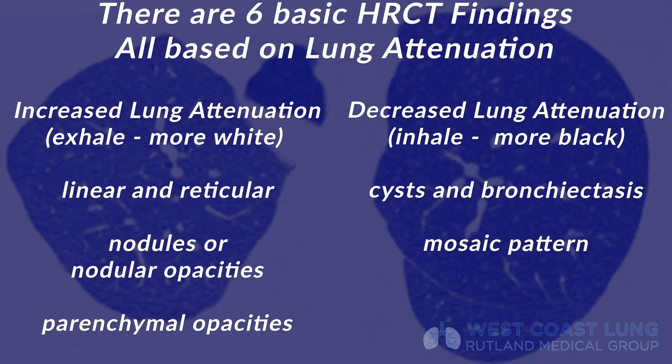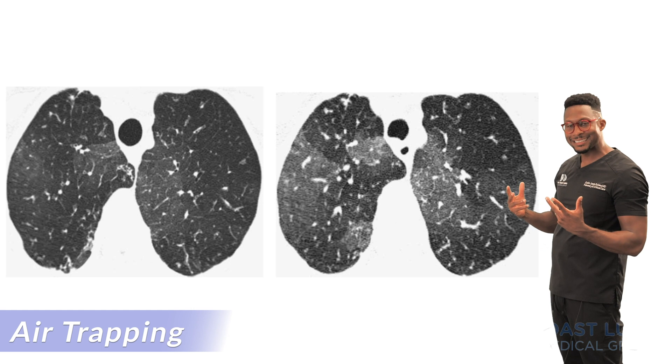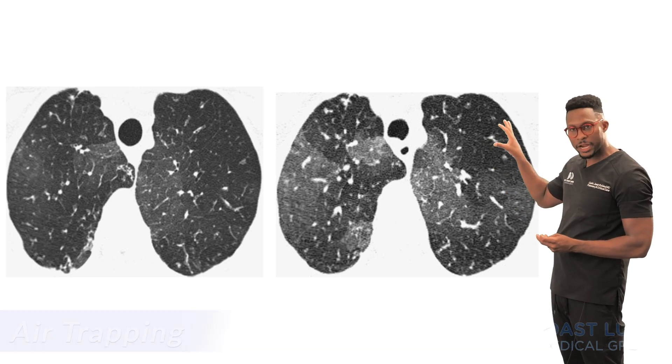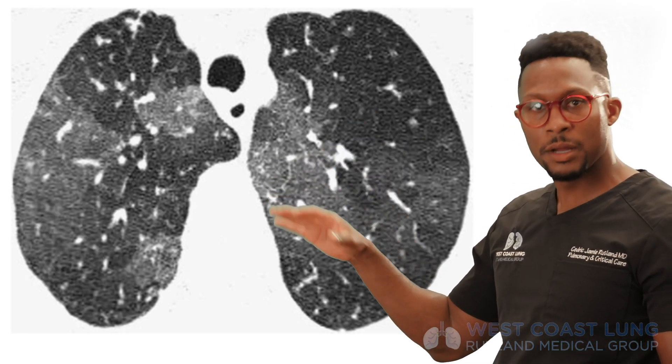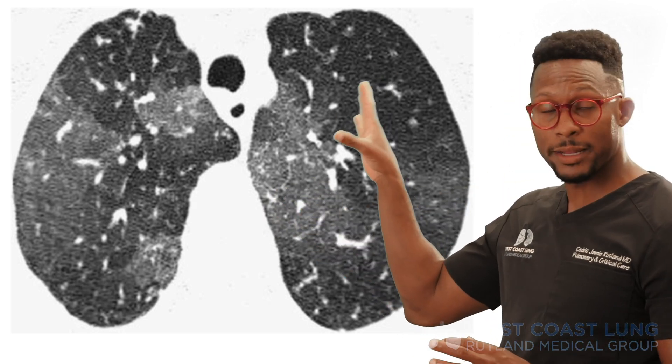The third finding of reduced lung attenuation is air trapping. Air trapping is difficult to differentiate from a mosaic attenuation or perfusion pattern and takes a trained eye. Imagine someone takes a deep breath in — their lungs are full of air. When they exhale, air trapping is the inability for air to escape from the lung. Air looks really black. You can see here an example of air trapping. You might want to get an expiratory CT to differentiate air trapping from a mosaic pattern.